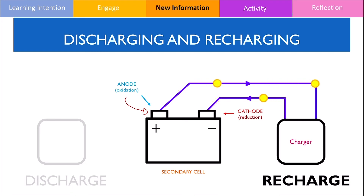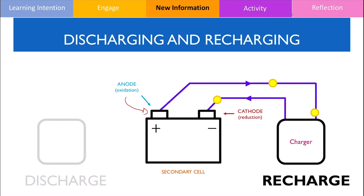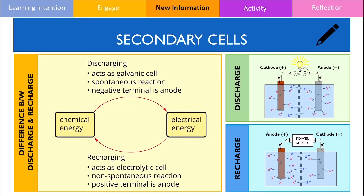It is crucial to understand the site of oxidation and reduction, and the polarity of the anode and cathode when the secondary cell discharges and recharges. All of this is neatly summarised in the slide over here. When the cell discharges, it acts as a galvanic cell, but when the cell recharges, it acts as an electrolytic cell — a new term that will be extensively covered in another video.